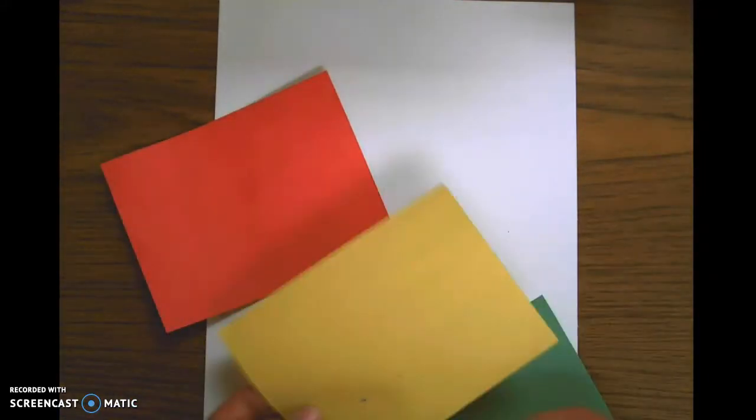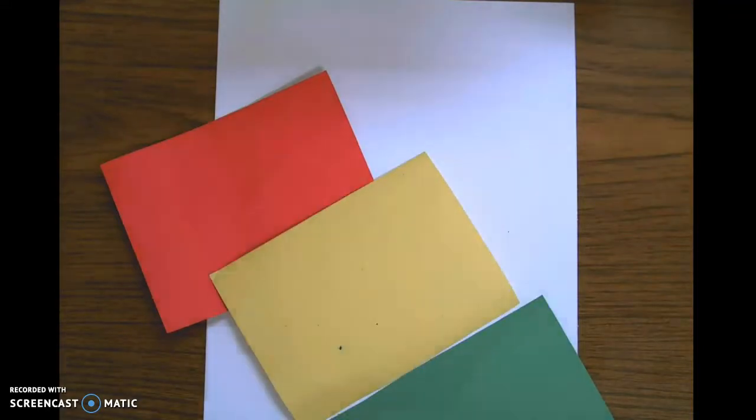So to do that, I have selected a white background and my students are able to select whatever color that they want to. And then I have some scrap paper here and I chose three different colors. I have green, yellow, and red so that I can have three different colors for my three different body parts.